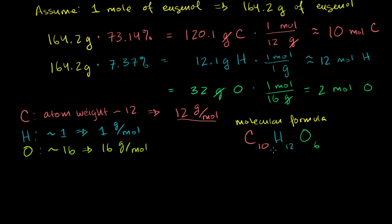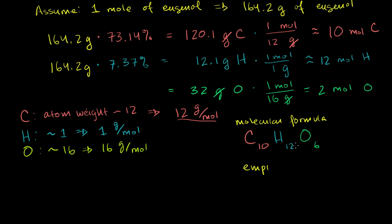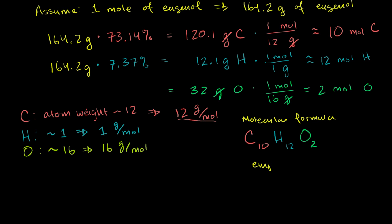The empirical formula is essentially this ratio reduced to simplest terms. All of these values — 10, 12, and 2 — share a common factor of 2. So dividing all by 2, the empirical formula is: 5 carbons, 6 hydrogens, and 1 oxygen, written as C₅H₆O.